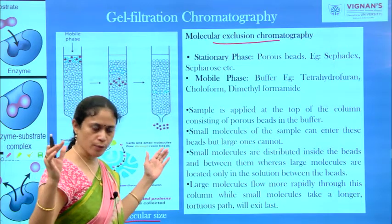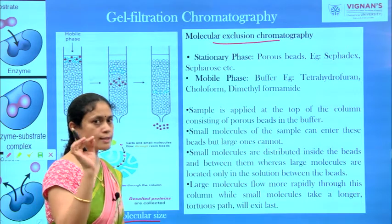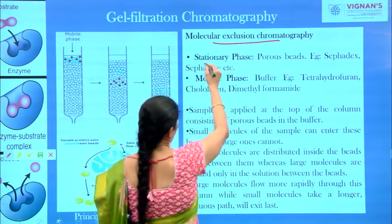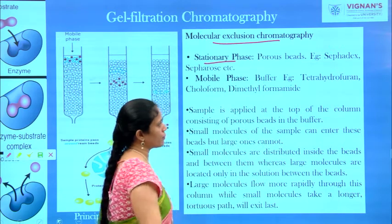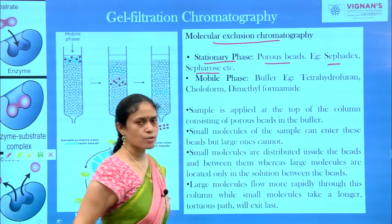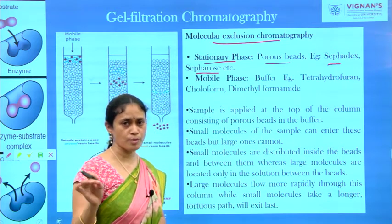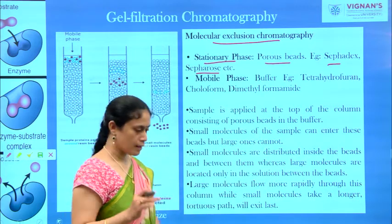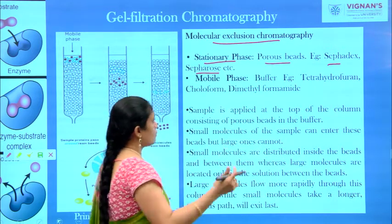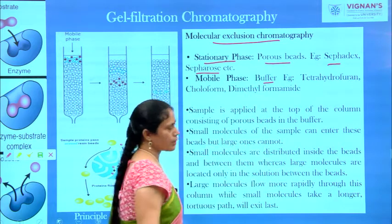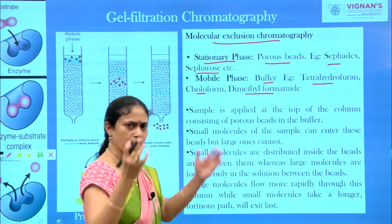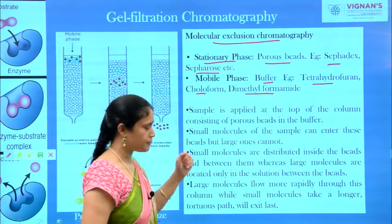As I have told you, we need both a stationary phase and a mobile phase. The stationary phase in gel filtration chromatography is porous beads, which are generally made up of Sephadex or Sepharose. For the mobile phase, we can use buffers, tetrahydrofurans, chloroform, or dimethylformamide — various solvents can serve as the mobile phase.